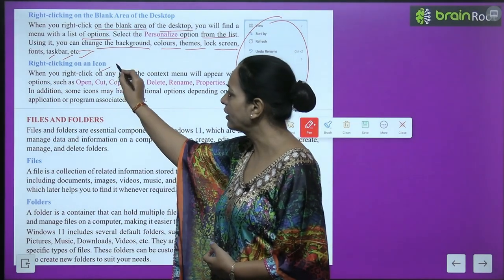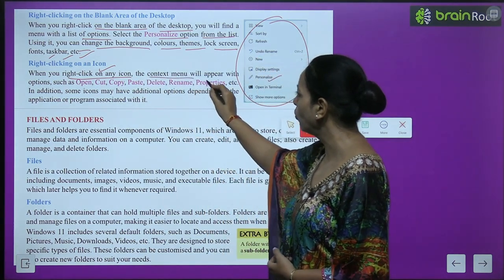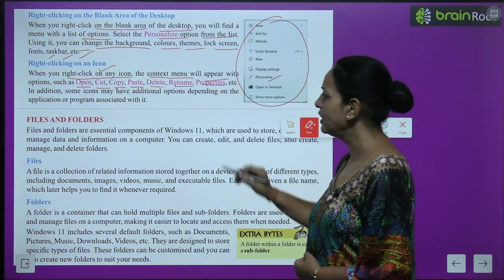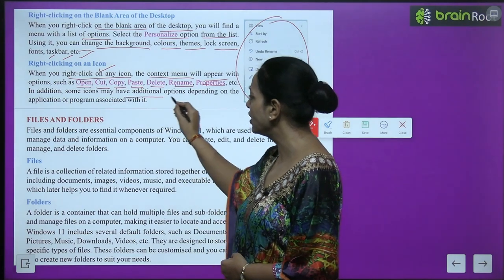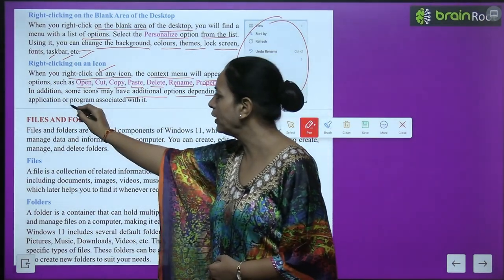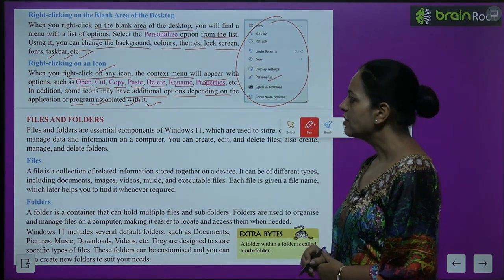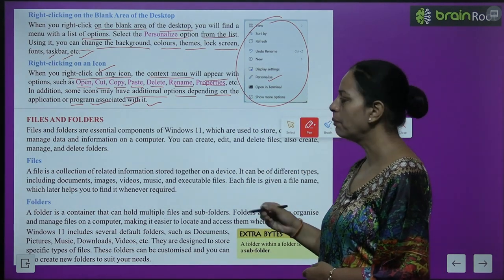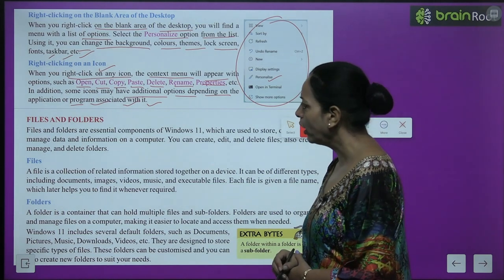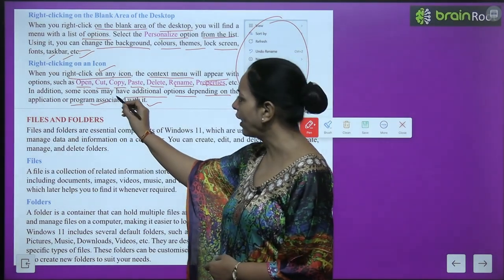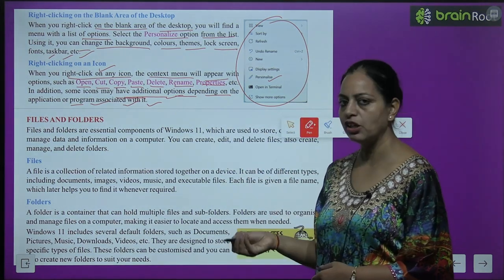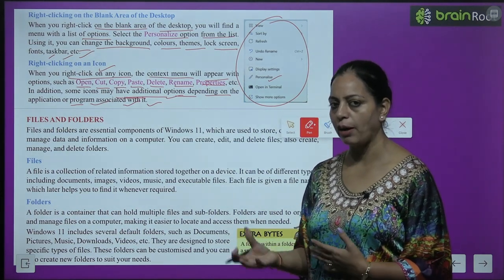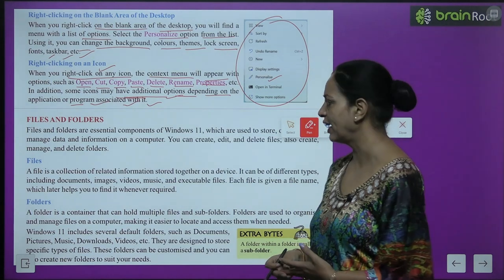Right-clicking on an icon: when you right-click on any icon, the context menu will appear with options such as Open, Cut, Copy, Paste, Delete, Rename, Properties, etc. In addition, some icons may have additional options depending on the application or program associated with them.